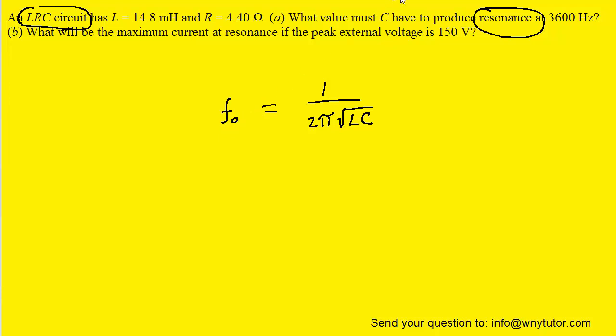We'll notice that the question gives us the value of that resonance frequency as 3600 Hz. We are also given the value of the inductance. Now it's given in millihenries, so we're going to have to convert it into henries by multiplying by 10 to the minus 3.